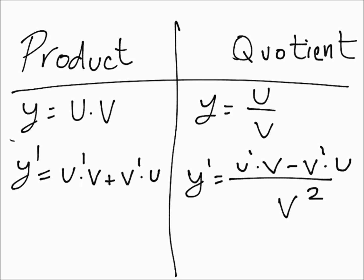In this video I'm going to solve some practice problems using the product and quotient rule. The product rule is used when you have a multiplication between two different functions, and the quotient rule is used when you have a division between them.